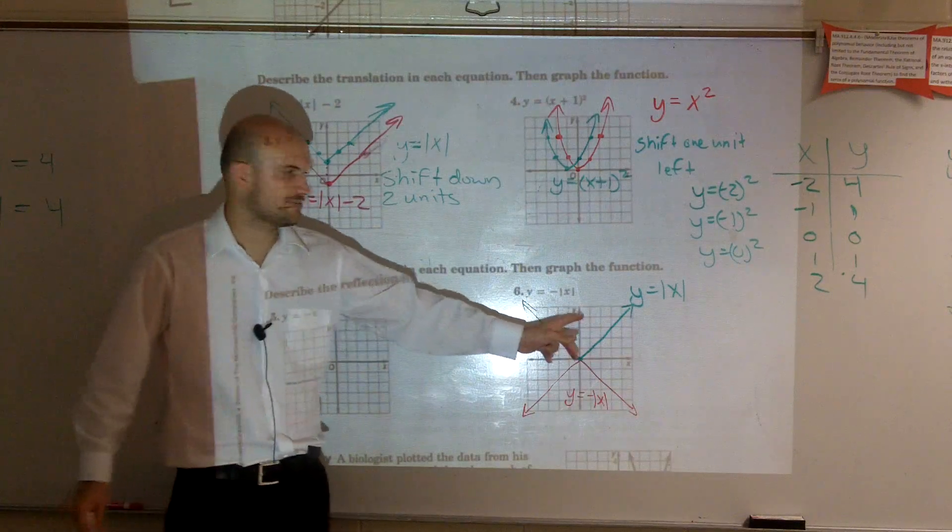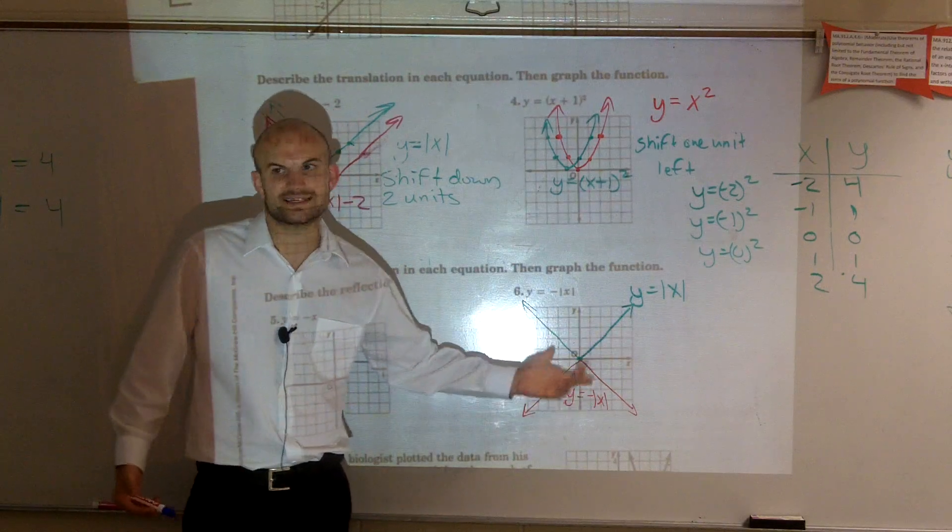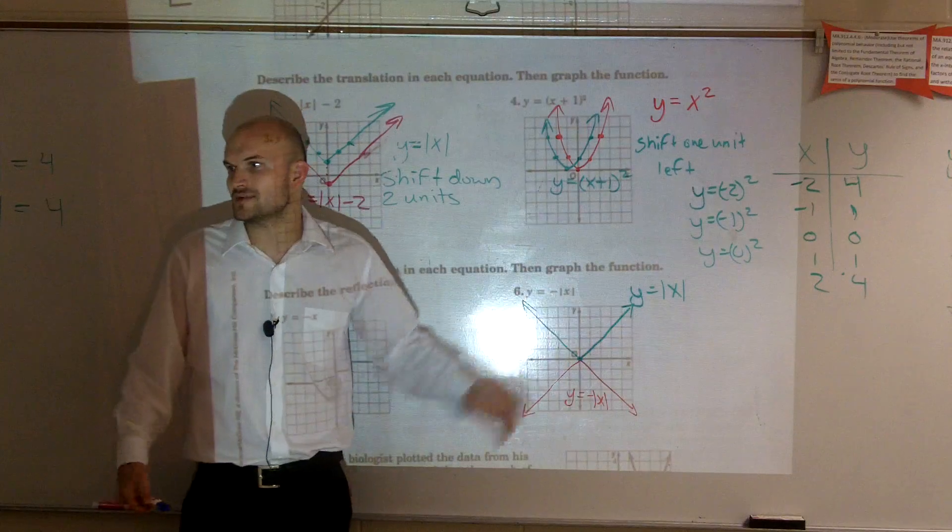If it was inside, you would reflect about the y. But what happens when I reflect it about the y, if it was inside? You're going to get the exact same graph, right? This is symmetrical about the y-axis. So it's the exact same graph. Kind of cool?